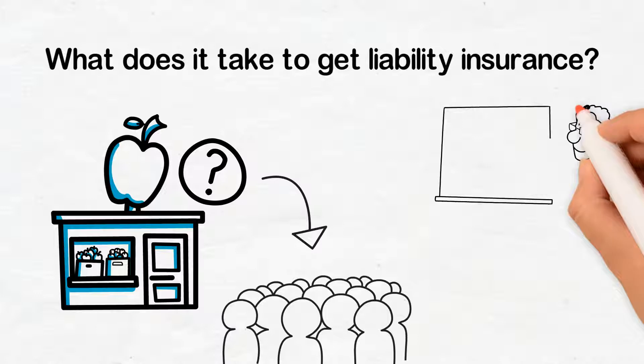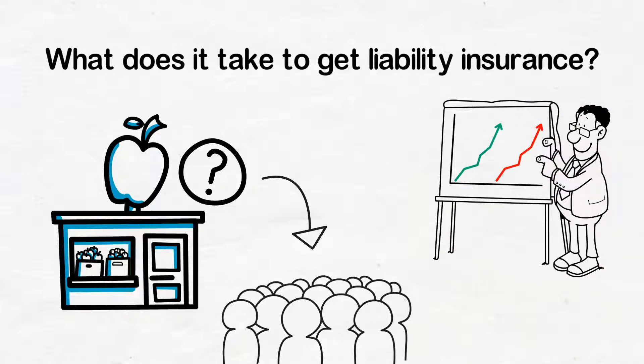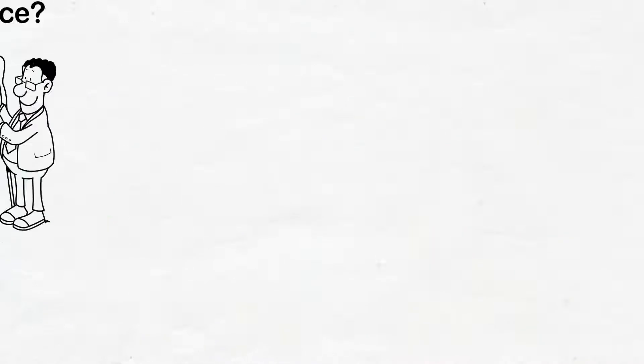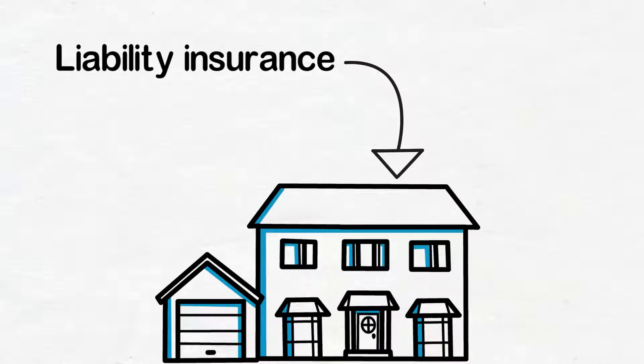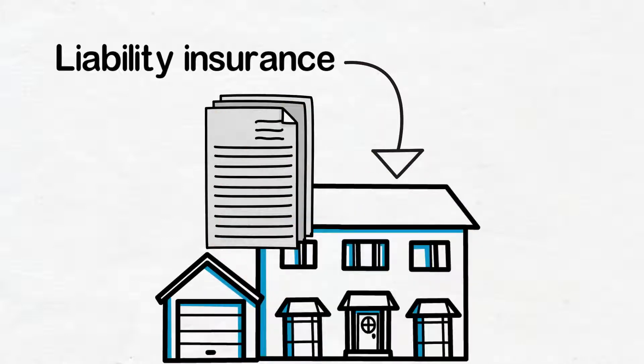The liability premium is based on the amount of work you do, and this is determined by your gross revenue, total annual business income. Liability can often be combined with your property insurance into a commercial insurance package policy.